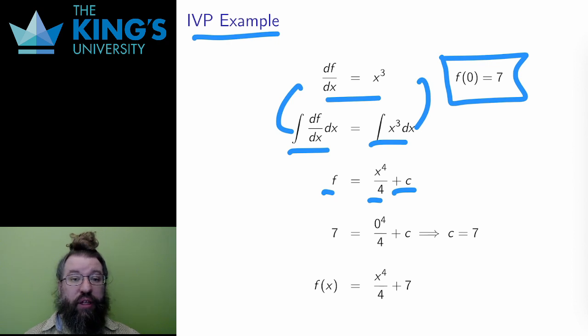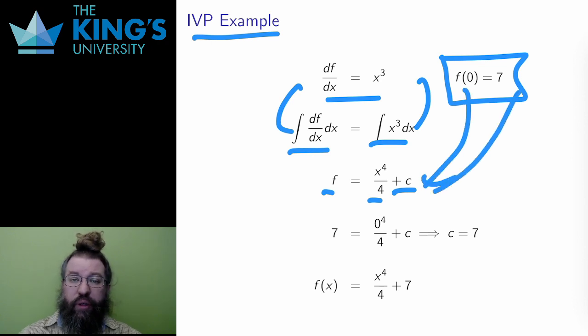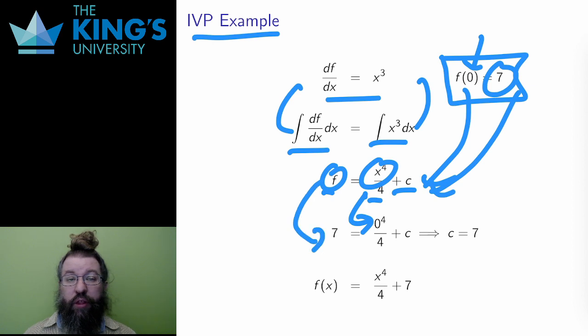So now I need to figure out c. To do this, I put the initial values in. f of 0 equals 7 says that when x is 0, f is 7. So I put x equals 0 and f equals 7 into the equation. The result is an equation where only c is unknown. This is pretty easy. The 0 goes away, and I just get c equals 7.